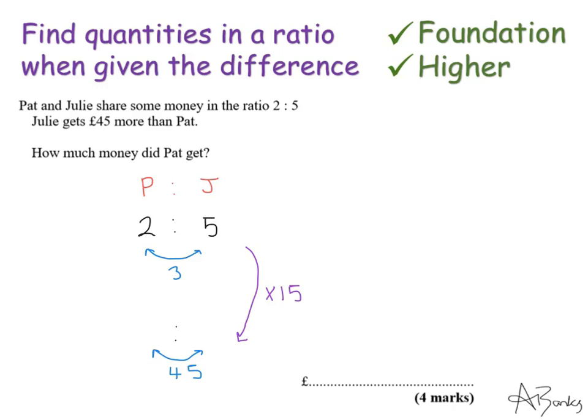So if I multiply the numbers in my ratio by 15, this gives me 30 to 75. This is in the ratio 2 to 5 and the difference between them is 45. I just need to make sure I answer the question — it asks how much money did Pat get, and Pat is the 30. So my answer is £30.